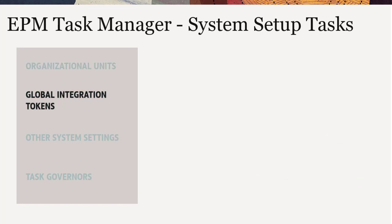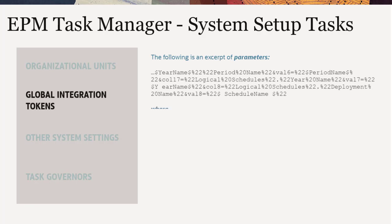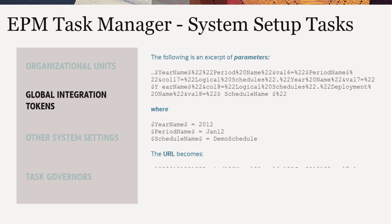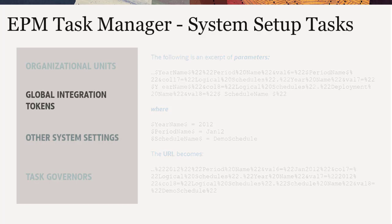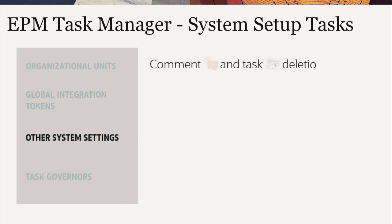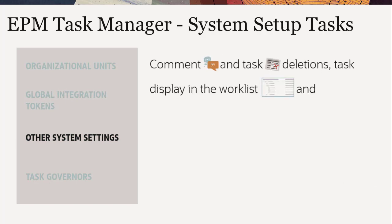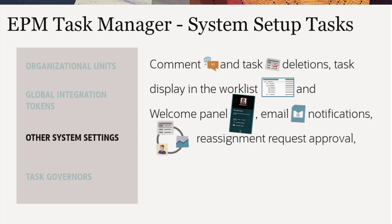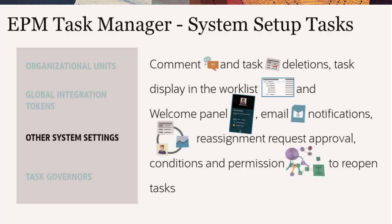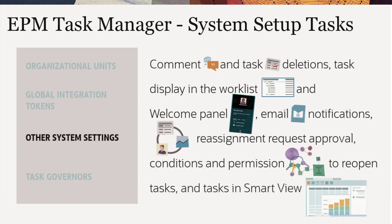Set up global integration tokens if you plan to use parameterized URLs. Configure URLs from static parameters in your application, attributes of type text and list, as well as native attributes assigned to tasks, templates, and schedules. Configure system settings such as comments and task deletions, task display in the worklist and welcome panel, email notifications, reassignment request approval, conditions and permission to reopen tasks, and tasks in Smart View.